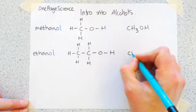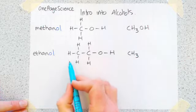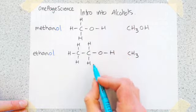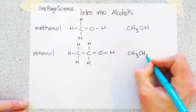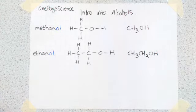And then we can draw this and represent this another way, which is to write CH3, which represents this first carbon. The next carbon is CH2. And then we've got our OH group that goes on the end.